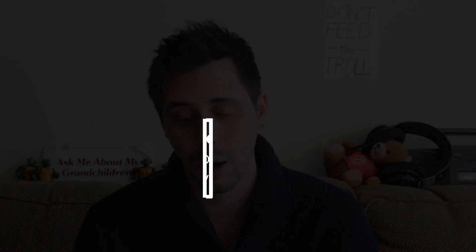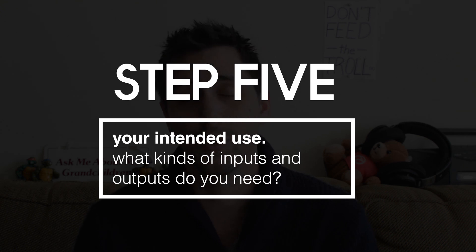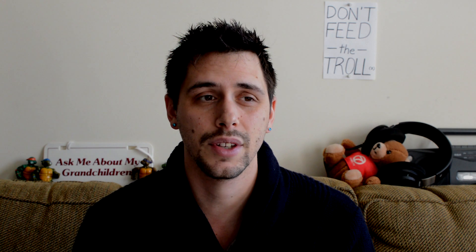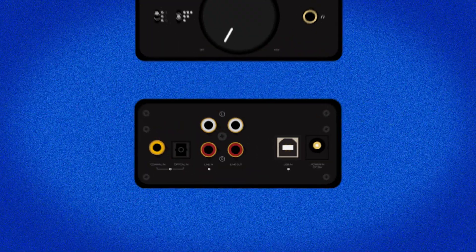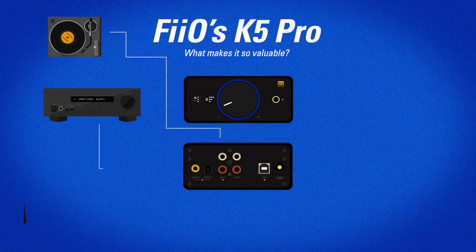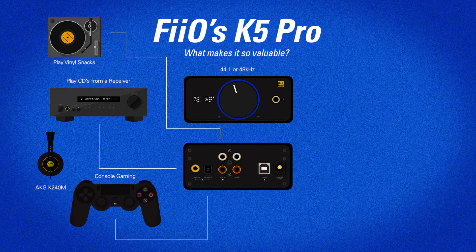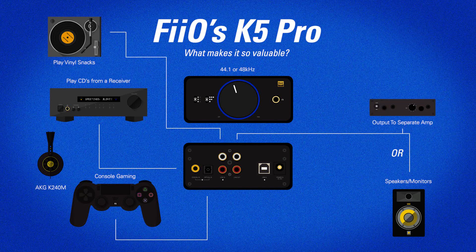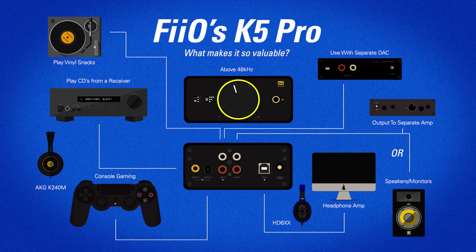Fifth: what kind of inputs or outputs do you need? RCA, line, et cetera. Do you need to output to separate speakers or studio monitors? The Fiio K5 Pro is a great example of an amp DAC that does a lot of different things — it has RCA line ins, RCA line outs, optical in, USB, and a coaxial input. You can output to separate speakers or monitors, use it with a wireless DAC like the Zen Blue, or just plug it straight into your computer and play immediately.